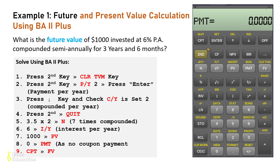Now press the compute button CPT and then FV for future value. It gives you a future value of 1229.87. Normally you will see a minus sign — don't worry about that. Because we entered the present value as a positive figure, the calculator returns the future value as a negative figure. That is just the default sign convention.